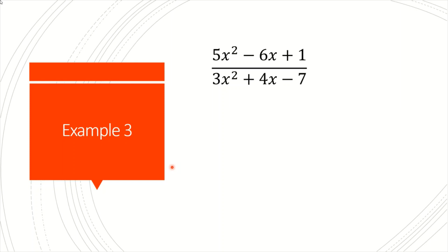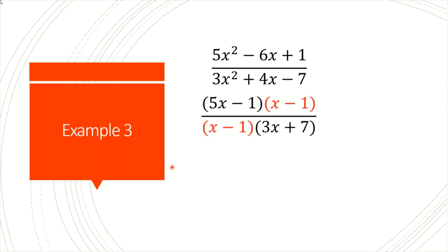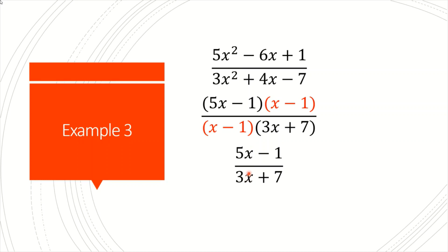So let's look at an example of this. First you want to factor. With both of these you would use the AC method because the coefficient in front of the x squared is not equal to 1. With factoring these types of problems, you want to do it as side work. So I factored both of these, the x minus 1s cancel, and that just leaves you with 5x minus 1 over 3x plus 7. Now you might be tempted to cancel out those x's, but you can't — because there are plus and minus signs in between, and you can only cancel factors with factors.